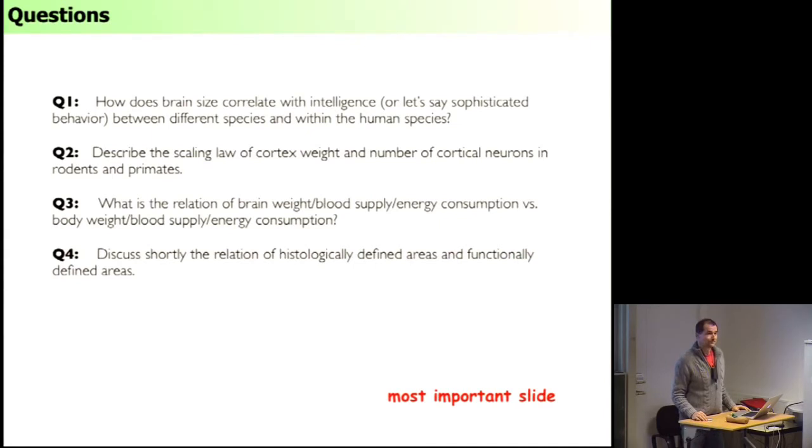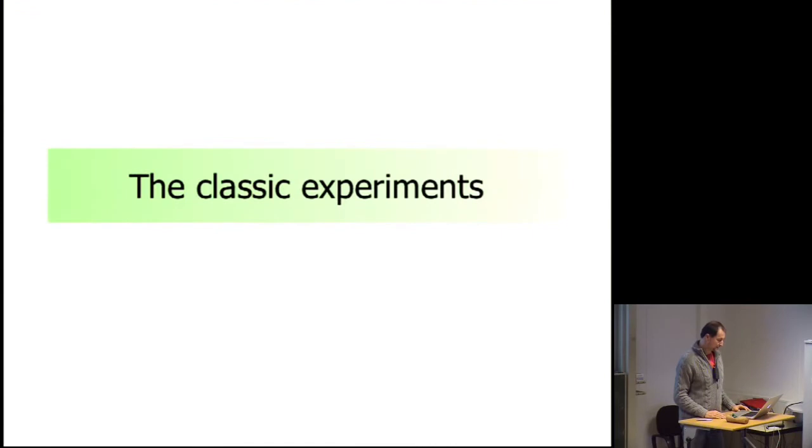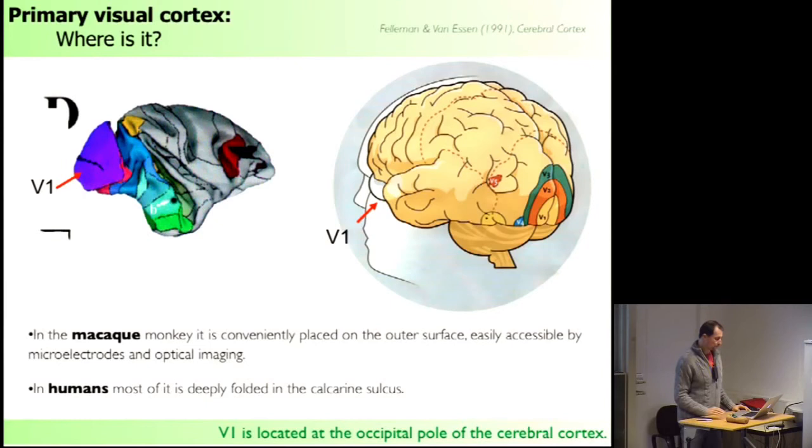Okay, questions so far? Good. I start with the classic experiments. We know a lot about primary visual cortex in macaque monkey where it's heavily investigated. Primary visual cortex is here at the occipital pole, here would be the frontal pole, occipital pole, dorsal, ventral. It's a purple violet area shown here and actually in the macaque monkey it is on a smooth surface. This has simple very strong practical advantages because you can look at the cortex in a very literal sense.